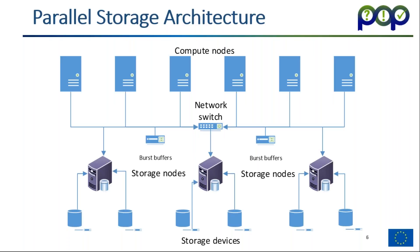This is a very simple schematic diagram of a parallel storage architecture. At the very top you have your compute nodes — normally hundreds or thousands of these — and they connect to a dedicated storage network which doesn't deal with inter-process communication. That connects to a switch, and on that network the storage nodes are connected. The storage nodes are connected directly to the storage devices, which could be direct attached storage, SAN systems, or RAID systems.